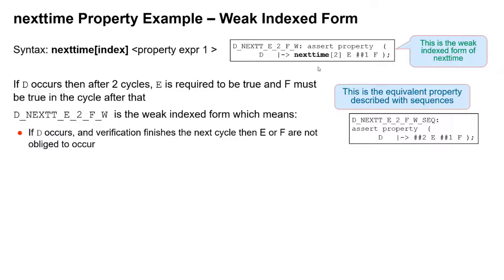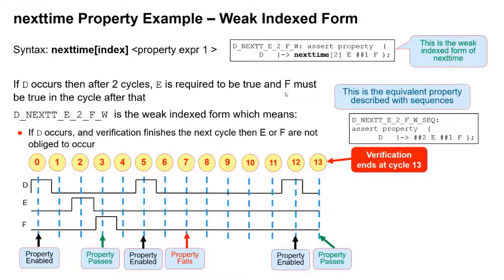So you notice here, instead of having nexttime two here, we just put hash hash two e. So you ask yourself the question, what is this for? And I've never found a reason in over 20 years. So let's have some examples of it passing and failing then.